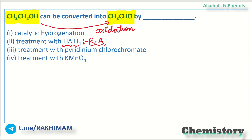Treatment with pyridinium chlorochromate — let's consider this. First, we need an oxidizing agent which will oxidize the alcohol to an aldehyde. The starting compound CH₃CH₂OH is ethanol, and the product CH₃CHO is also derived from ethanol — so this is an ethanol oxidation. We don't need a reducing agent here.